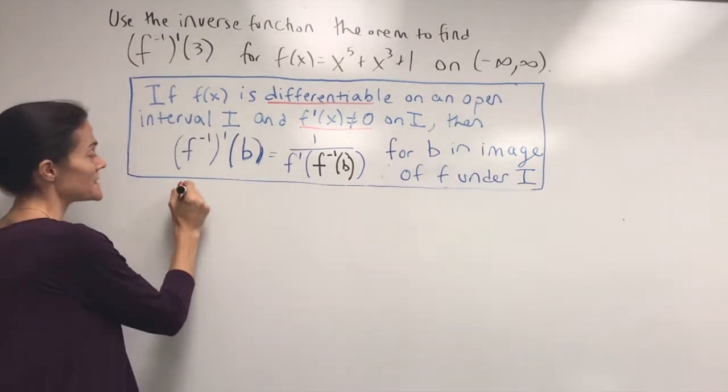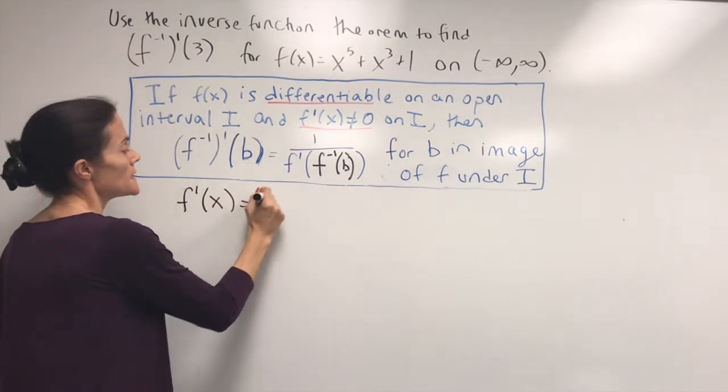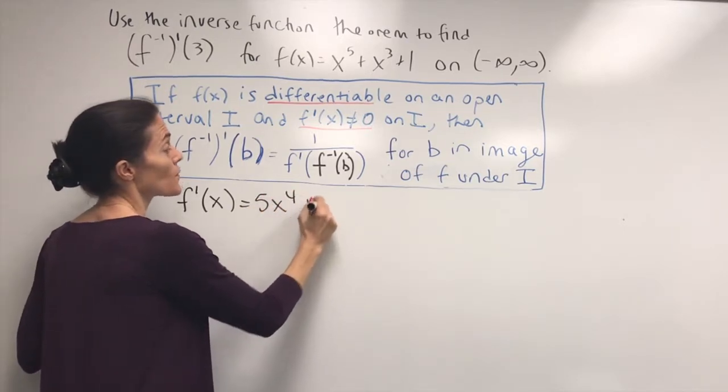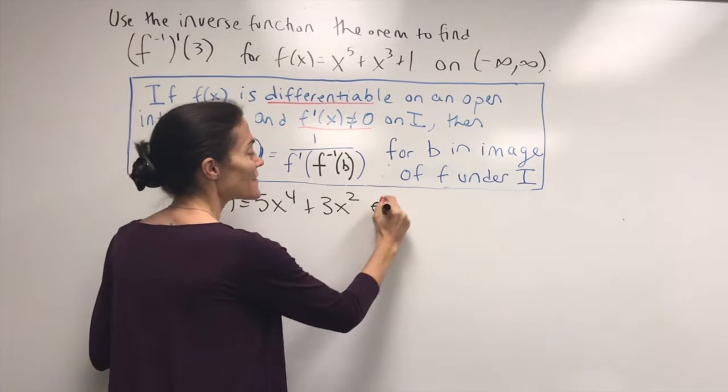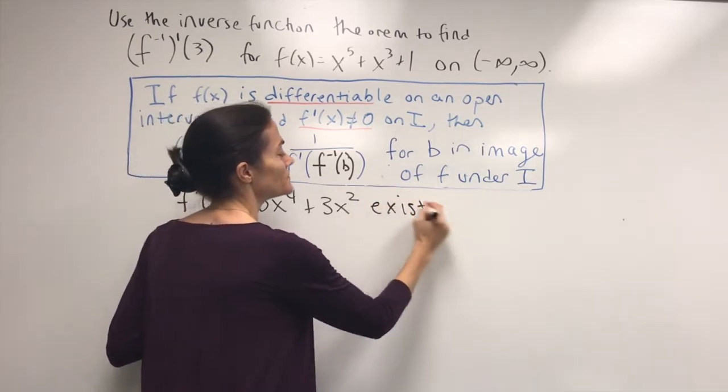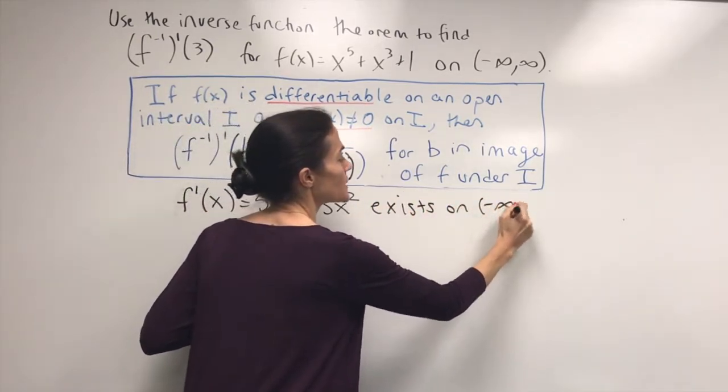The derivative is 5x^4 + 3x^2, and this certainly exists everywhere on the whole real line.